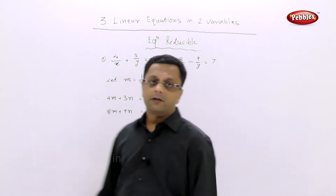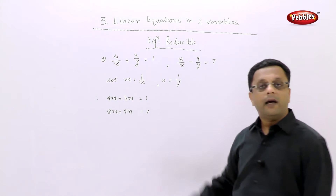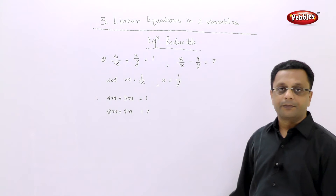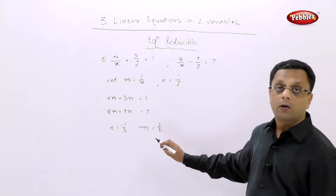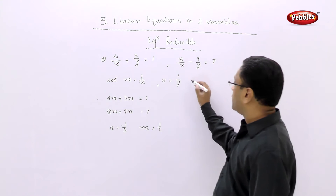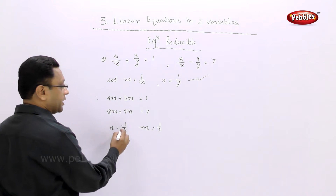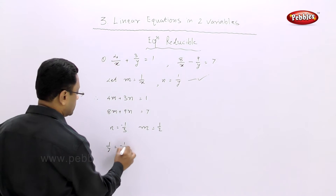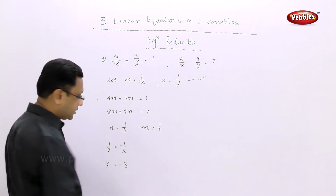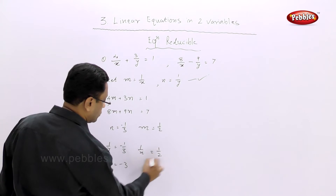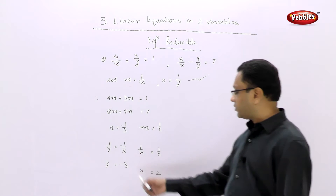We have solved so many examples simultaneously, so I don't think I should solve this again. Better you pause your video and solve this and find out the value of m and n. By solving this we will get n equal to minus 1 by 3 and m equal to 1 by 2. We have to resubstitute: n is 1 upon y equal to minus 1 by 3, so y equal to minus 3. m is 1 upon x equal to 1 by 2, so x equal to 2. Ultimately we get y equal to minus 3 and x equal to 2.